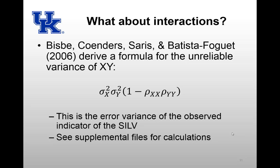So a lot of times if you're trying to use a full structural equation modeling approach, the interaction term can substantially increase the computational complexity of the model. But with the single indicator latent variables, it's pretty simple. Bisby et al. in 2006 derived a formula for the unreliable variance of XY, so that's the error variance of the observed variable that's the indicator on this SILV, and the formula is here.